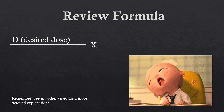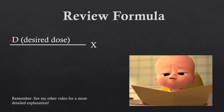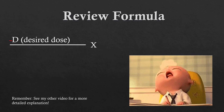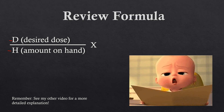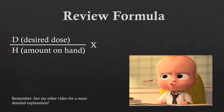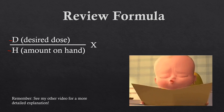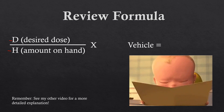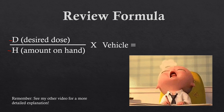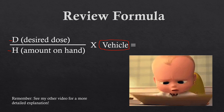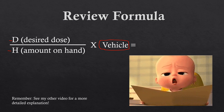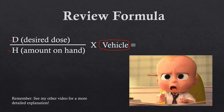On top we've got the desired dose, represented by D — that's how much we want to give the patient. On the bottom we have H — the amount we have on hand, that's what the medication comes in. And then there's the vehicle, which is the part that most people get mixed up on.